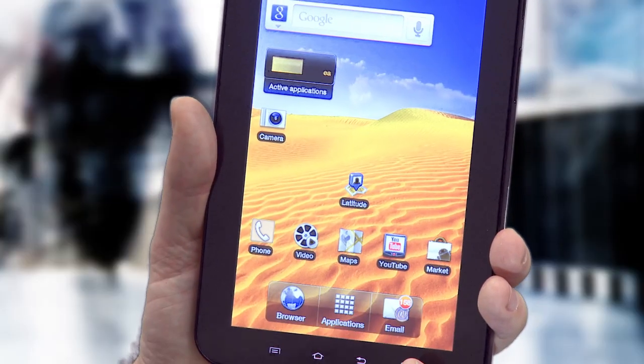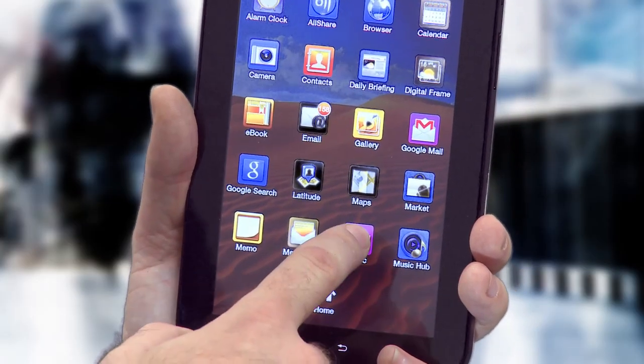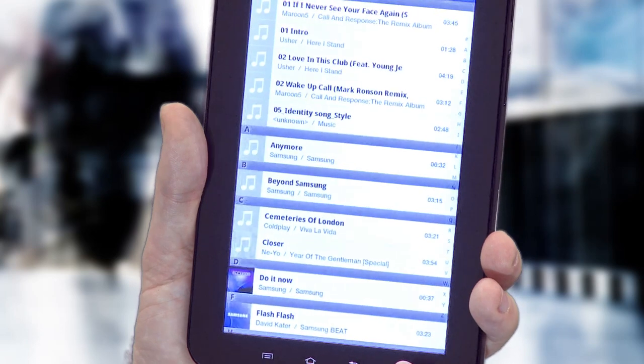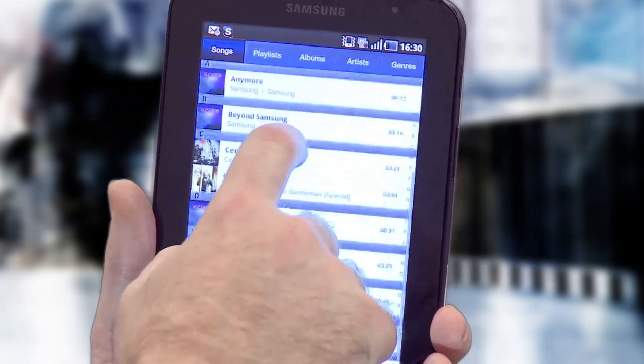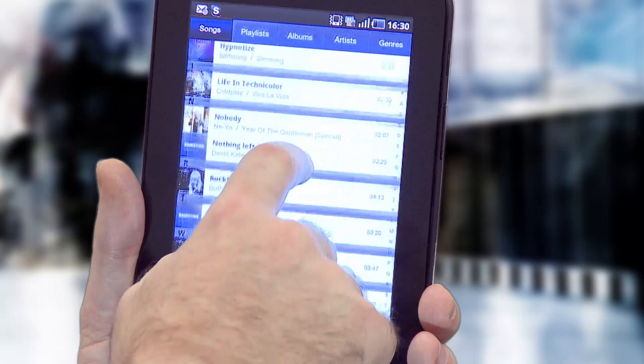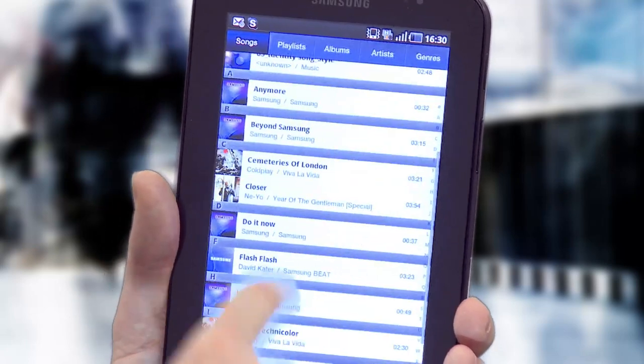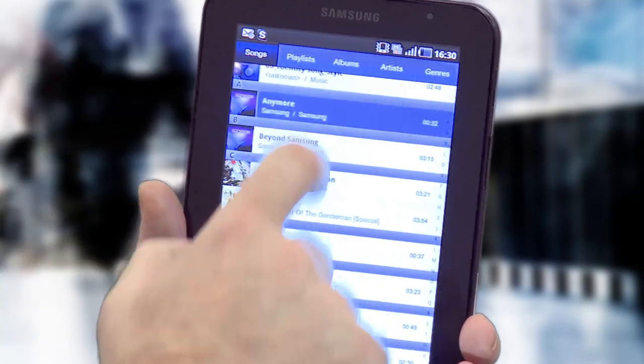The Samsung Galaxy Tab also acts as an e-book reader and a music playing device. There are a few applications that show these features off quite nicely, so let's go into music. The music application brings up all the music that is saved on this device.